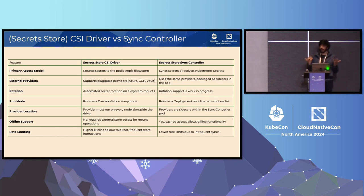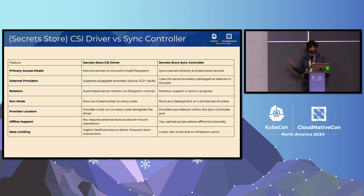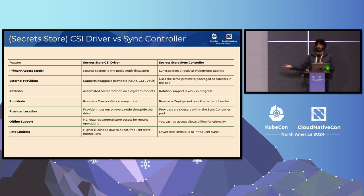This is a quick comparison of what the driver does and what the controller does. The driver is for the specific use case of mounting secrets in the temporary file system, while the controller is for scenarios where you need them as a Kubernetes Secret. The same set of providers is supported for both. For rotation, the controller's support is work in progress, while the driver's has been stable for a while. The driver and providers run as daemon sets on every single node, but the controller is just a deployment with two replicas. The controller handles offline support and rate limiting better since it syncs once and is then used across different pods, rather than having the daemon set talk to the external secret store every single time.